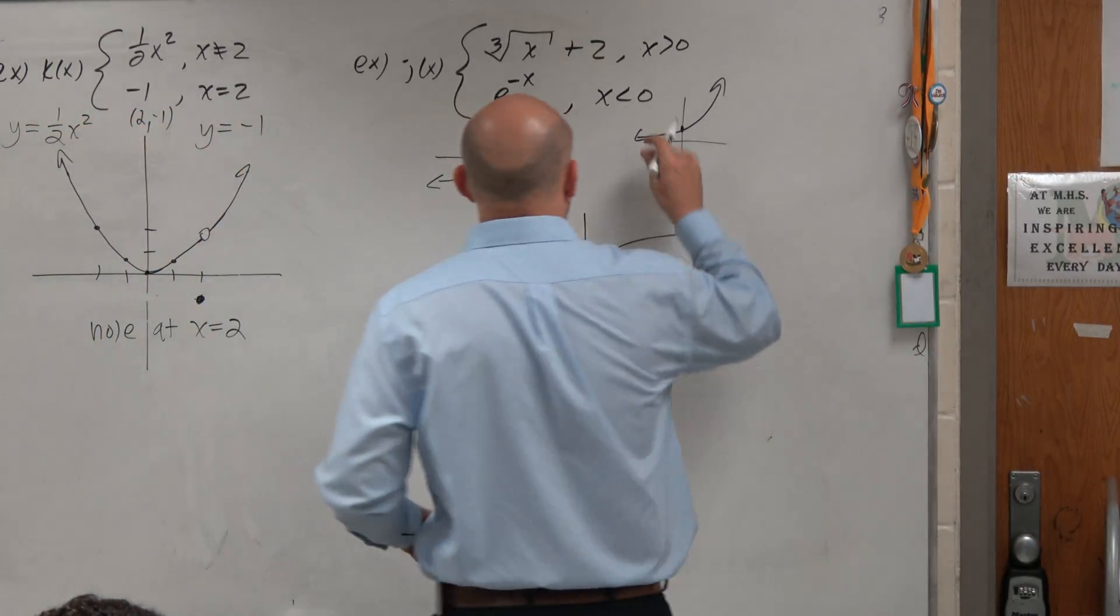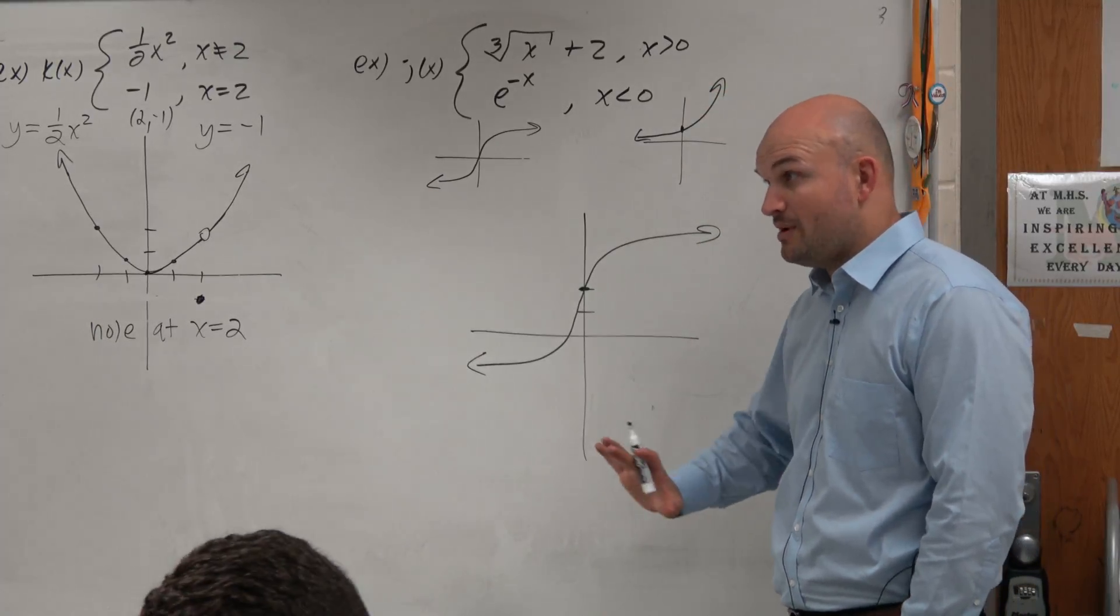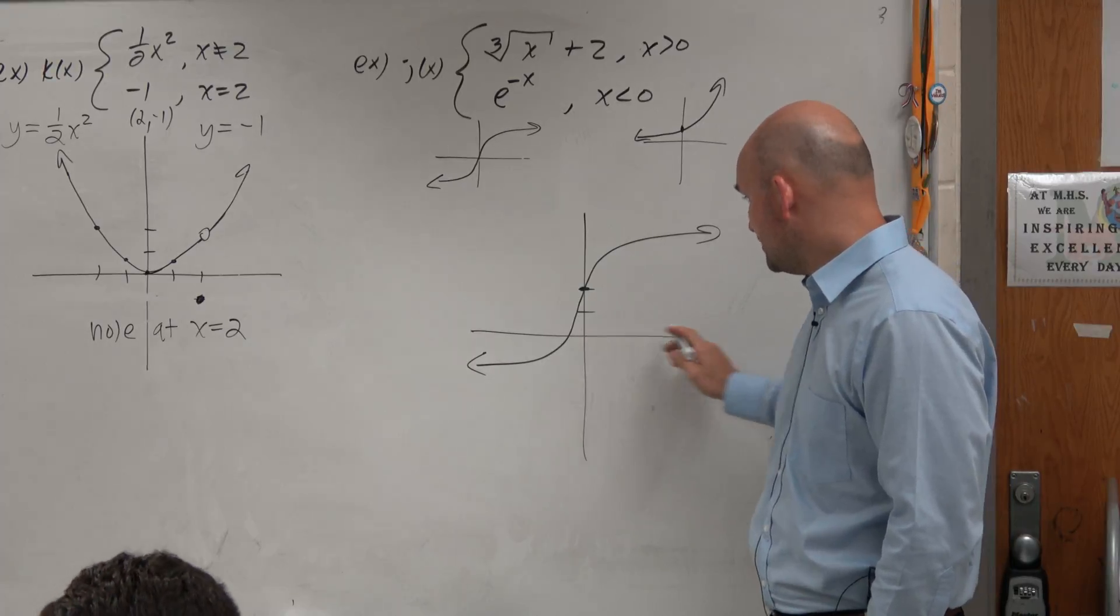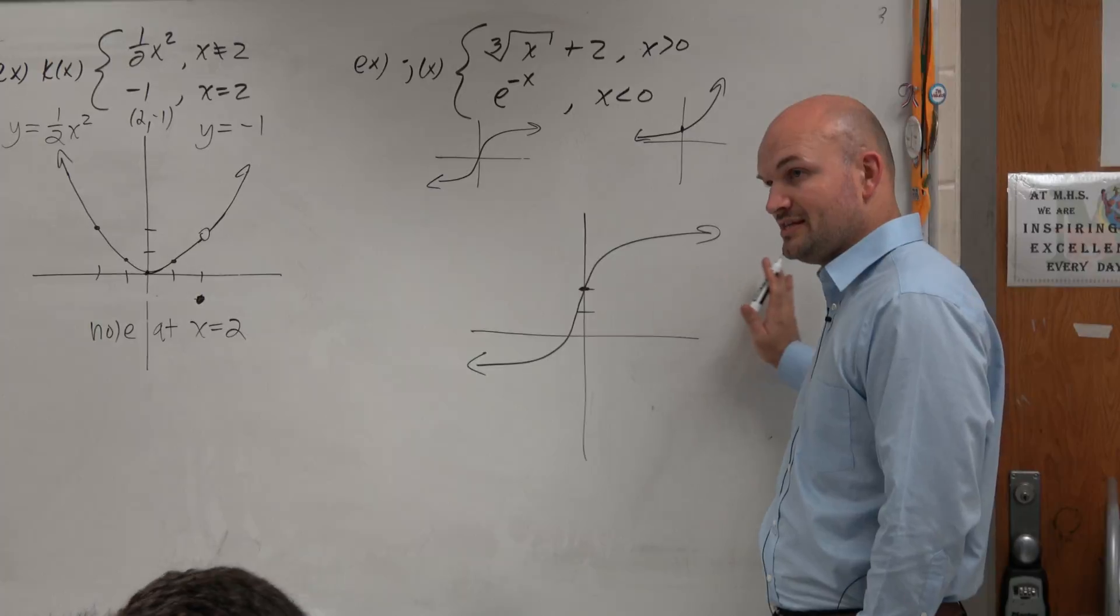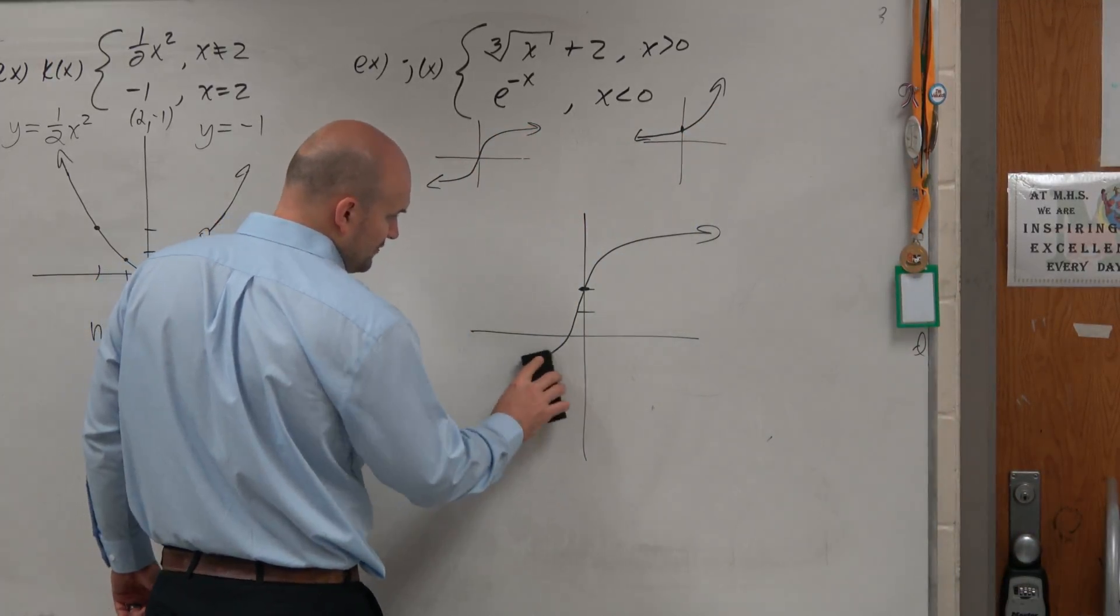However, it says only graph this for when x is greater than 0. That's the only time I want this to be graphed. So you can see, here's the x-axis. For x values that are greater than 0, that's only everything that's positive. Only when x is positive are you going to graph this function. So we don't need to graph anything over here.